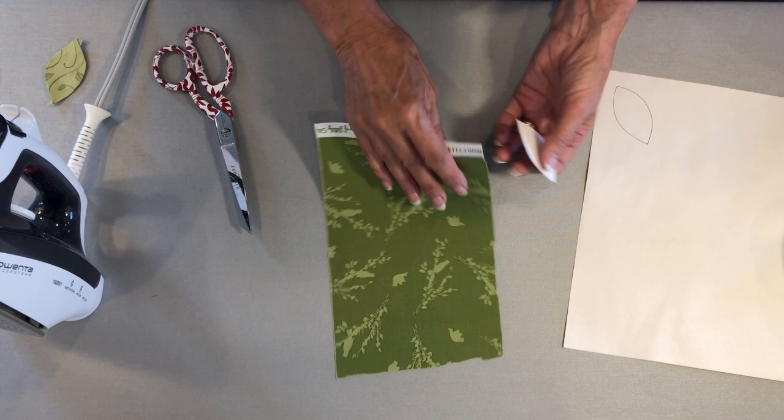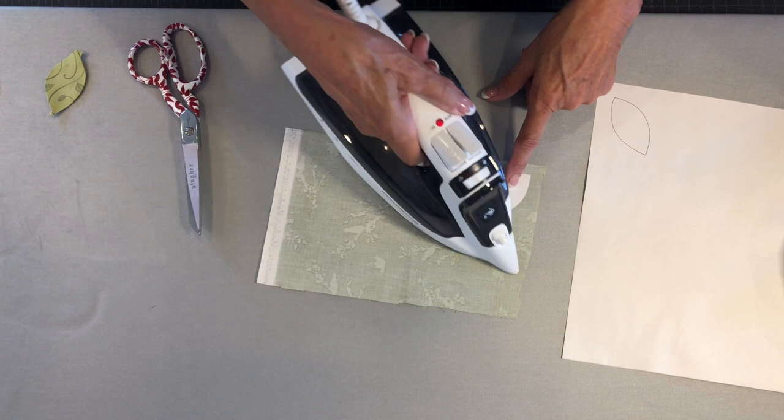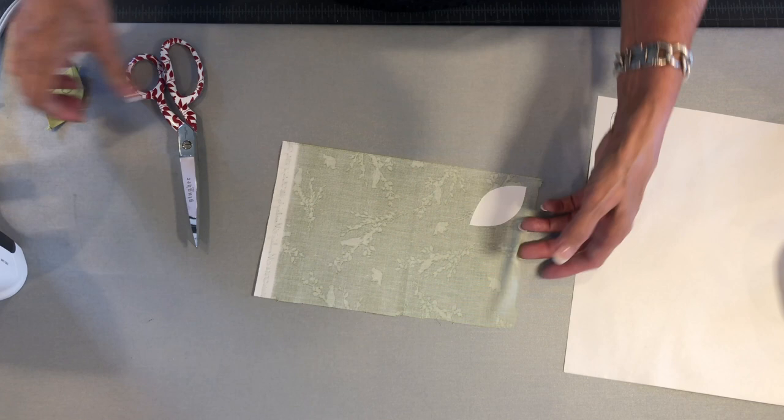I'm going to place the template on the wrong side of the fabric and press with my iron until it fuses. It's just a few seconds and it's going to fuse to it—just a temporary bond.